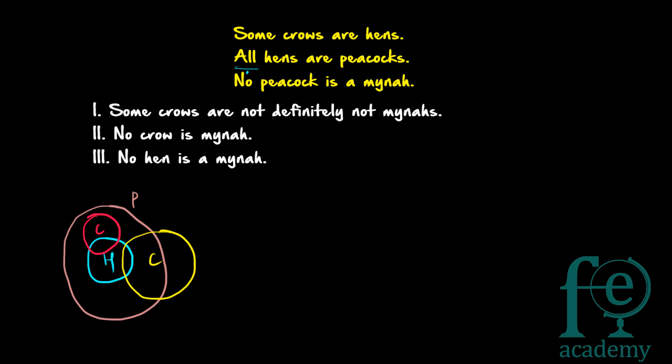No peacock is a mina — that is the third statement given. So how to represent that? No peacock is a mina means mina can come here outside the peacock circle, that is one possibility. Or mina can overlap with the crow circle — some of the minas can be crows. M1 and M2 represent the two ways mina can come: either mina is not crow, hen, or peacock, or the mina can be crow — that is the second possibility.